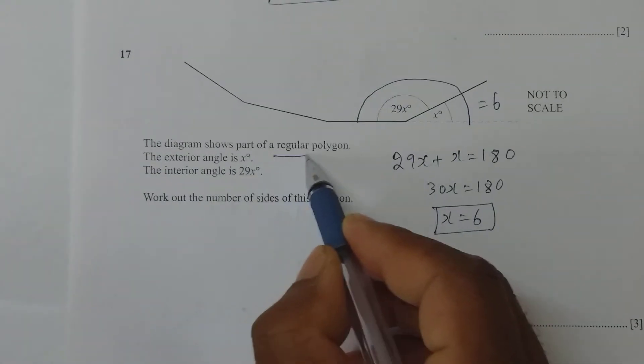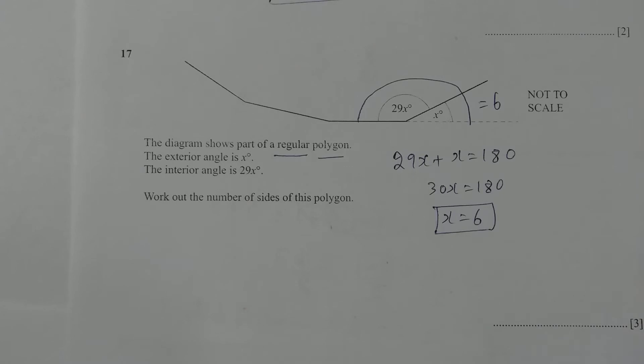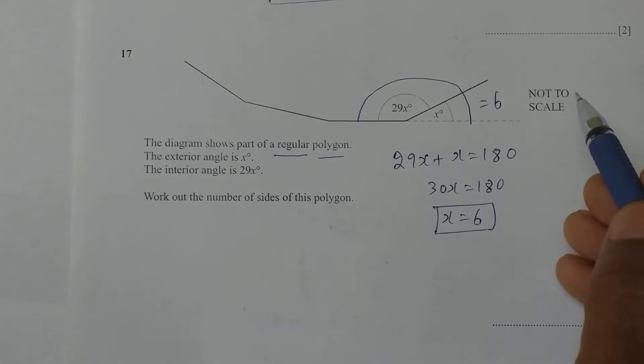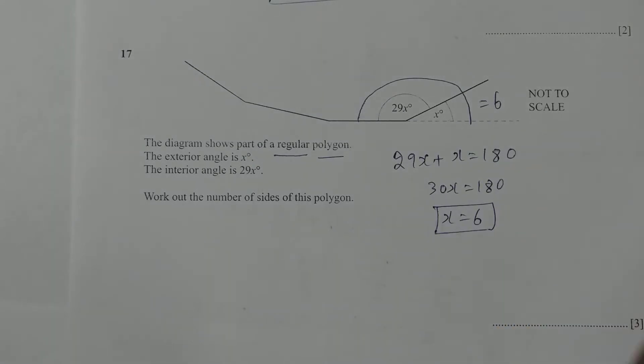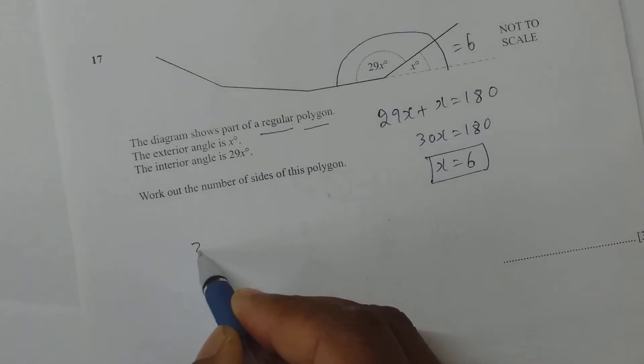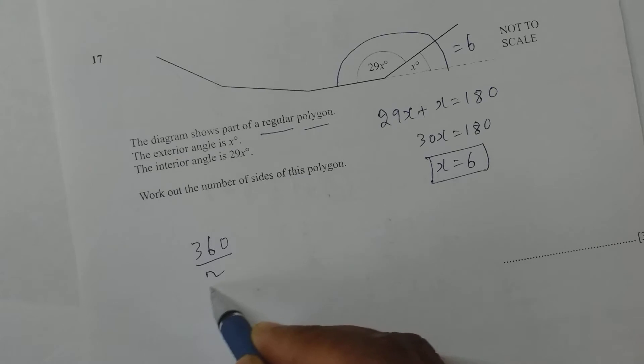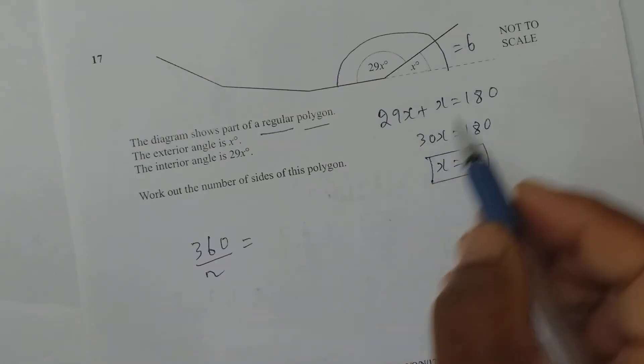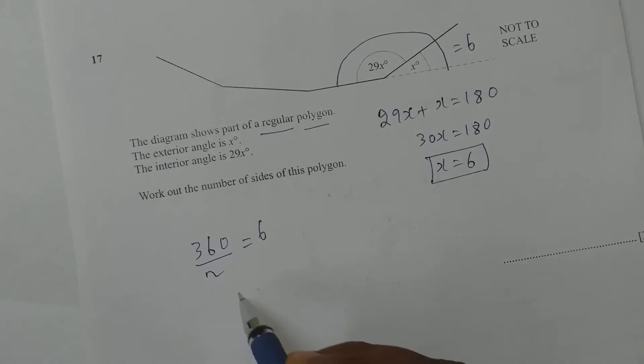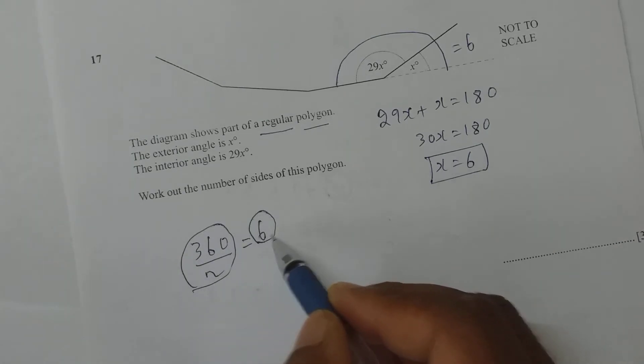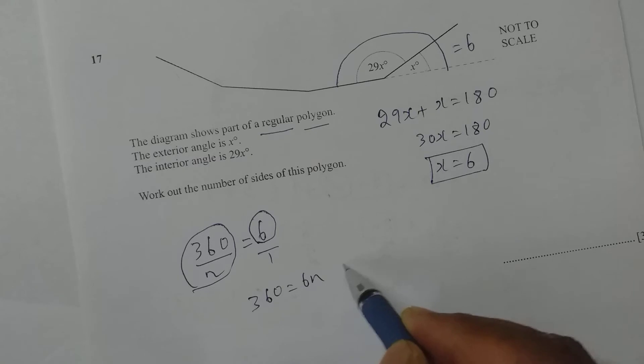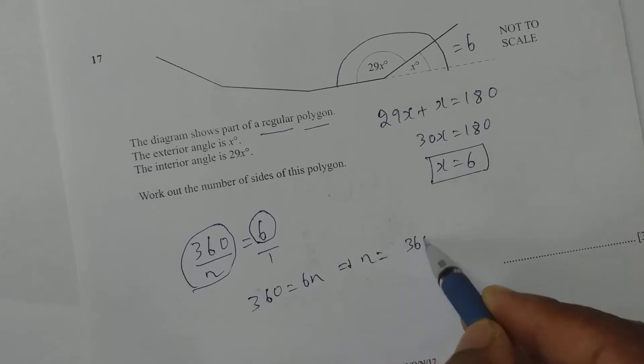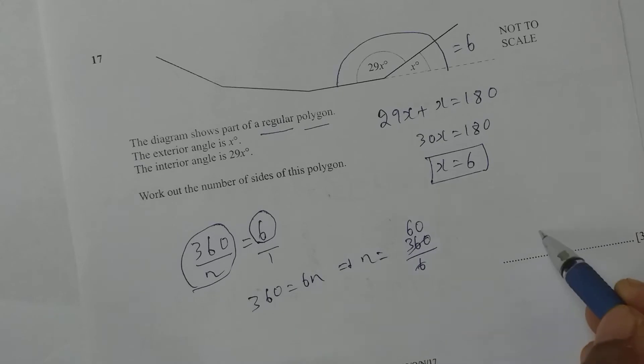It's a regular polygon, which means each interior angle is same and each exterior angle is also same. What is the formula for each exterior angle in a polygon? 360/n, where n is the number of sides. We found it equals 6. So 360/n = 6. Solving: 360 = 6n, so n = 60 sides.